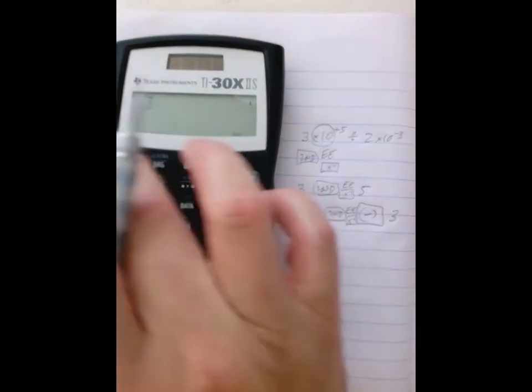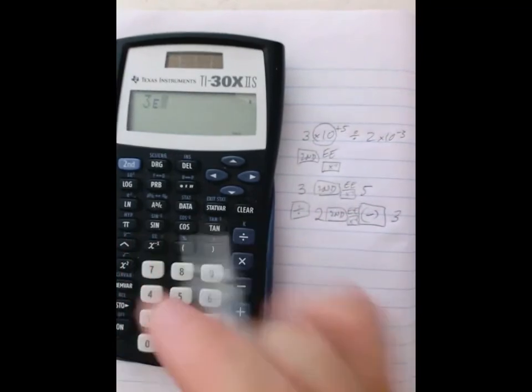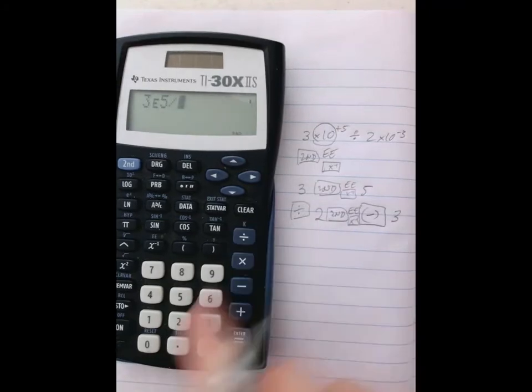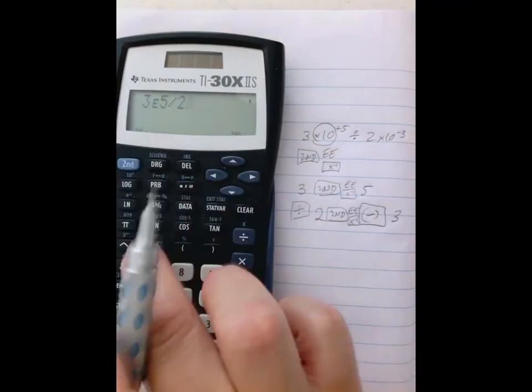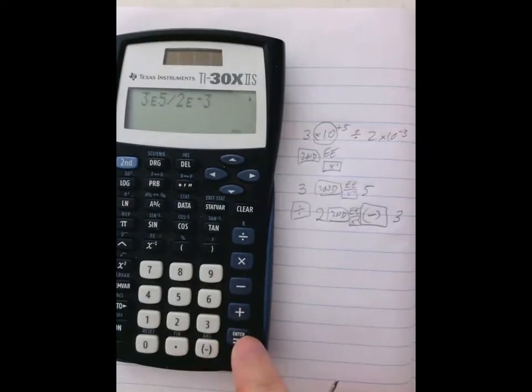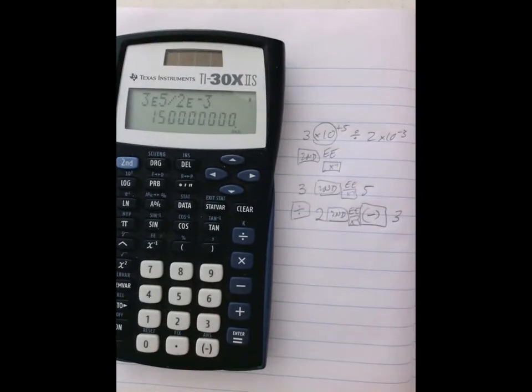So 3 second EE. On the screen it only shows one EE. 5 divided by 2 second EE negative 3. And you get this answer: 1.5 followed by a bunch of zeros.